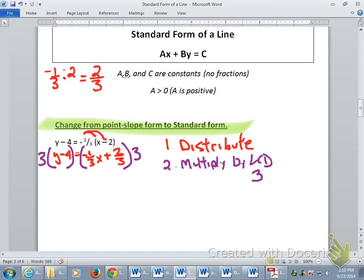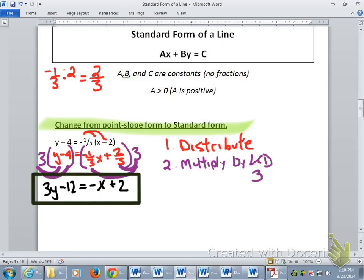That's going to be three y minus 12 equals three times negative one-third x is going to be negative x, and three times two-thirds is plus two. Notice, though - fractions gone. That was the whole point.